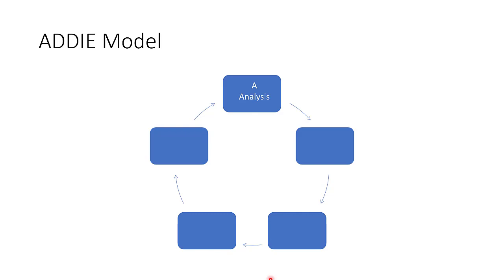Let's look at the first element. A represents Analysis. In the analysis phase you conduct what we call a needs analysis. You look at the environment, the situation on the ground, and the goal — what is the goal of this course?